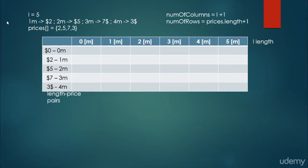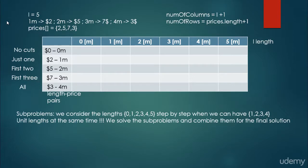For example, with rod length 5 and prices 2, 5, 7, 3 for lengths 1, 2, 3, 4 meters respectively, the number of columns equals L plus 1, and the number of rows equals prices.length plus 1, accounting for the extra zero column and zero length. The column headers represent lengths 0 through 5, and the rows are the length-price pairs. We consider subproblems for L equal to 0, 1, 2, 3, 4, and 5 step by step.